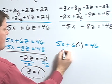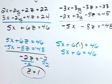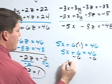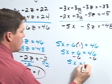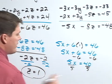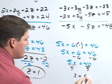So 5x plus 6 equals 46, and I can subtract 6 from both sides. So 5x would equal 40. Dividing both sides by 5 gives me x equals 8.